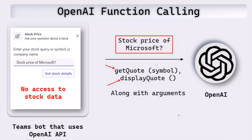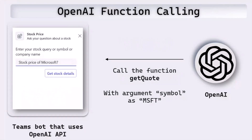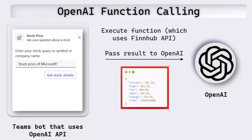OpenAI gets this information and tries to understand the intent of the user. Since we're asking for the stock price of Microsoft, OpenAI tells us to call the function get quote, with the argument symbol set to MSFT. OpenAI computes all this itself based on the question and tells us to call this function. In our code, we call get quote, which calls the FinHub API and gets the raw JSON data including the stock price, high, low, etc. That JSON is then sent back to OpenAI.